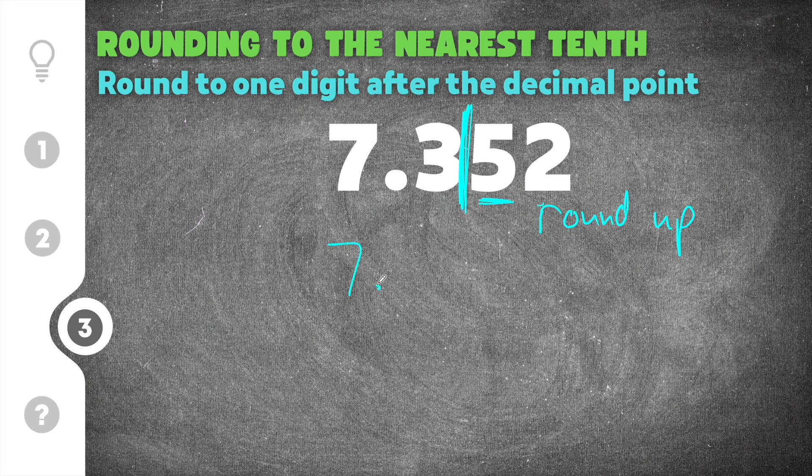So when I rewrite this, I'm going to write seven point, and then we have three, but actually the five rounds the three up. So this three is going to turn into a four, and then I'm going to write zeros for five and two.